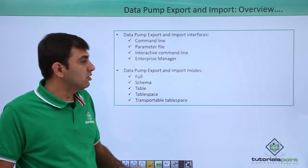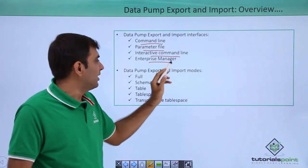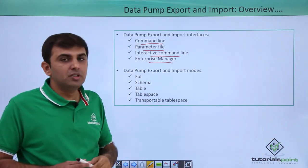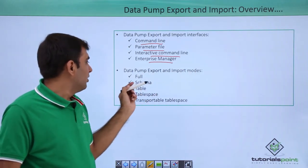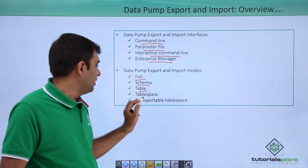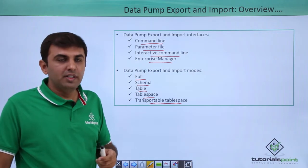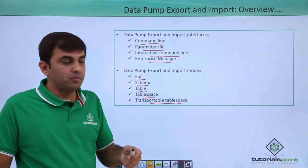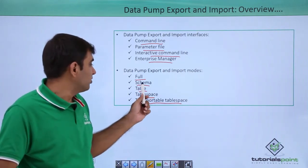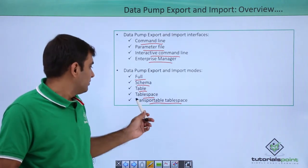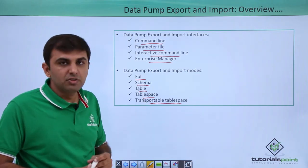Data Pump export and import interfaces include: command line, parameter file, interactive command line, and Enterprise Manager. Using these four interfaces you can perform your import and export operations. Data Pump export and import modes are: full, schema, table, tablespace, and transportable tablespaces. You can export only a single table, a full database, a specific schema like HR or Scott, transportable tablespaces, or tablespaces only.